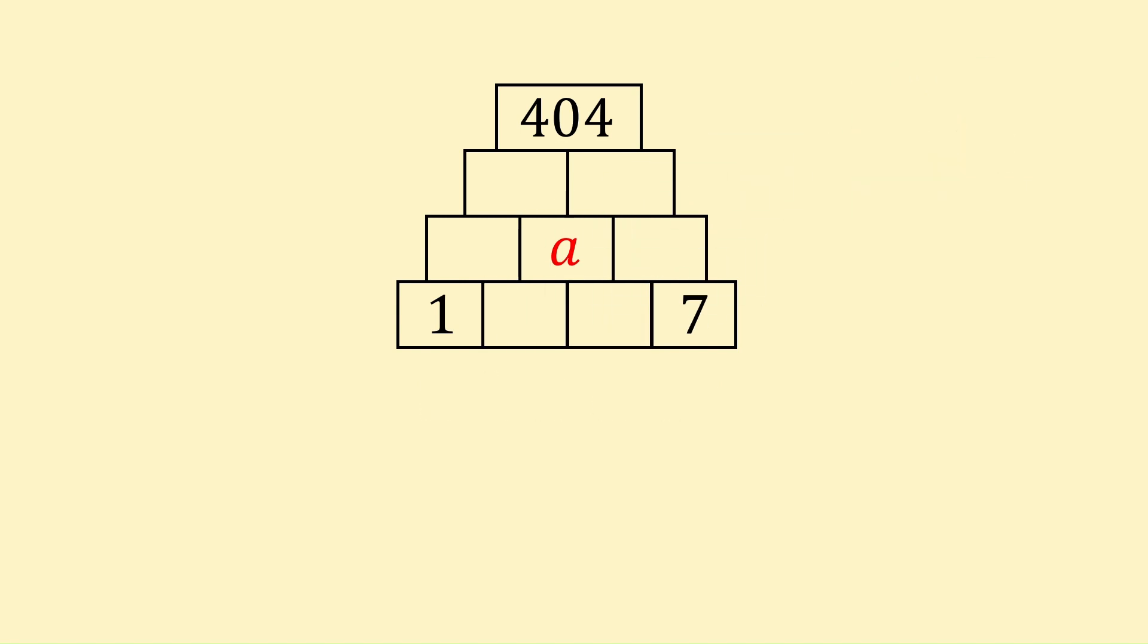The only blocks we've been given are the ones in the corners, 1, 7 and 404, so it's tough to see where to start. We know that the rule of number pyramids states the value of the blocks on the bottom defines the value of the blocks above. So let's start from the bottom and call the two missing blocks x and y.